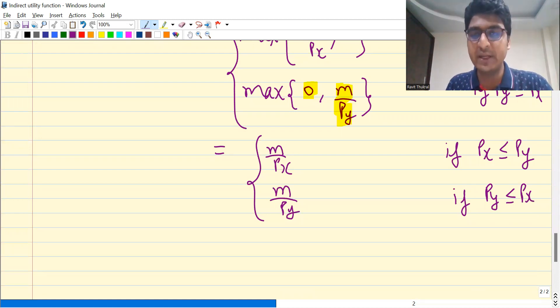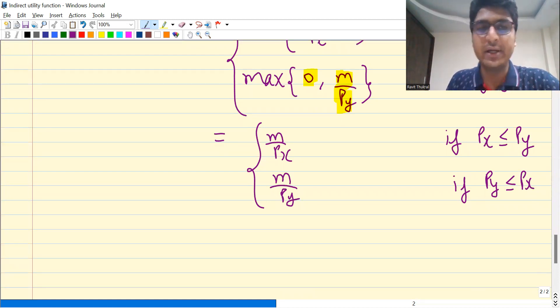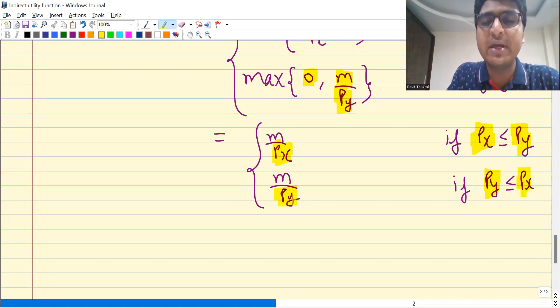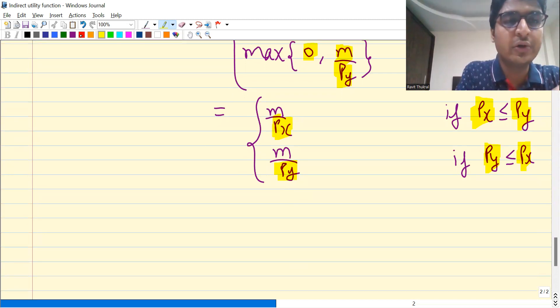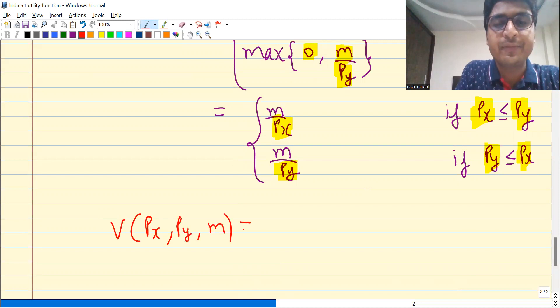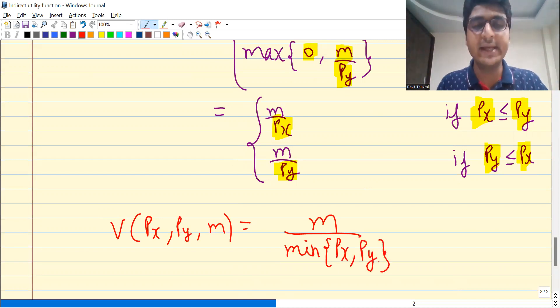But mostly you will have to find a shorter way to write it. So if you observe this carefully, when Px is less than Py, the denominator is Px, and when Py is less than Px, the denominator is Py. That means the smaller price is in the denominator. So I can write indirect utility function as m upon minimum of Px and Py. That's how you can write the indirect utility function of max X and Y.